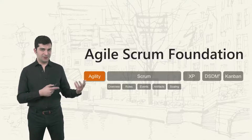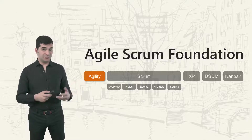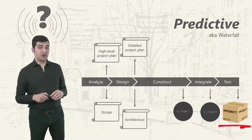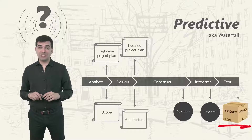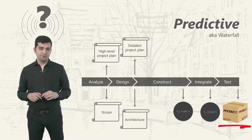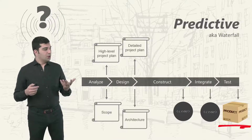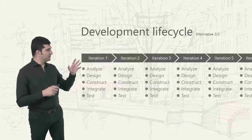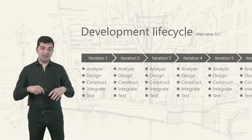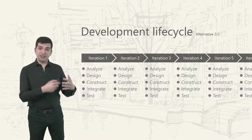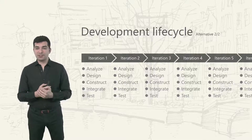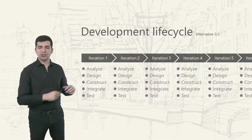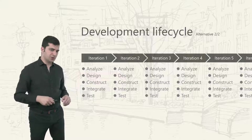Could you think about a different type of life cycle that doesn't have the problem of creating the product at the end of the project? This is the alternative that we can have. Instead of running the development processes one at a time, we can have some partitions of time — let's call them iterations.